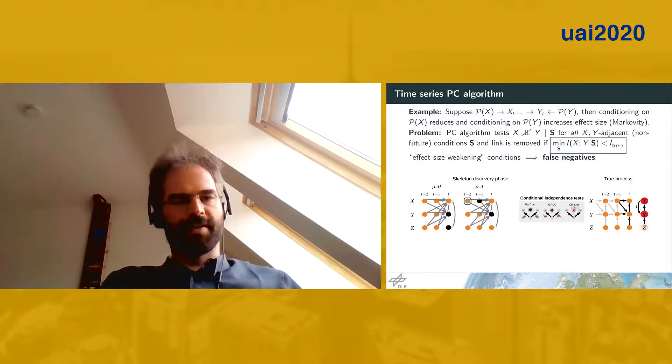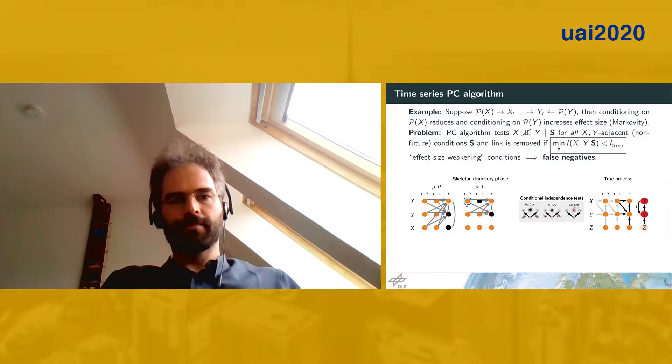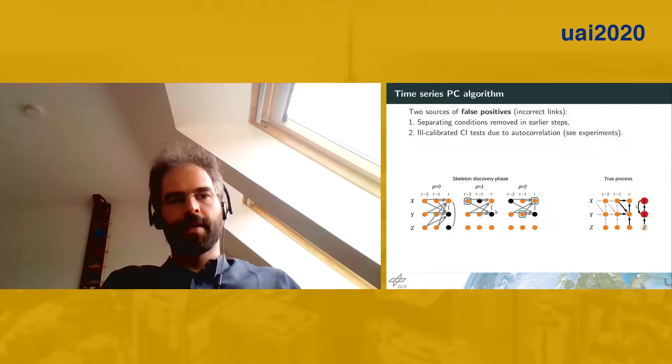False positives occur due to other reasons. I will go through a little illustration here. For P equals zero, the skeleton phase would not condition on anything, and we would remove this link if the effect size is too low. For P equals one, we have this link in the ground truth. If we condition on the parents of X here, this blue box, then this link would be removed and we would end up with this graph at this step.